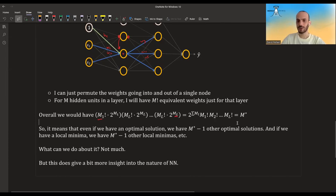Overall, we would have this amount of symmetries. And what it means is that if we have an optimal solution, there's also this amount minus one other optimal solutions. And if we are stuck in a local minima, there's also this number of other local minimas that are symmetric to our local minima.